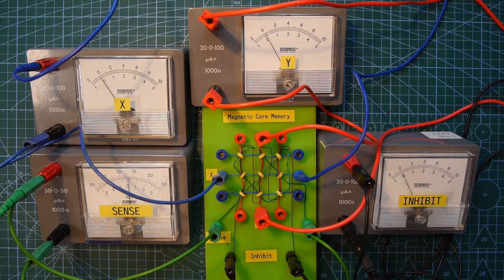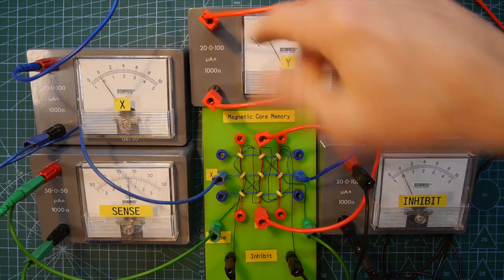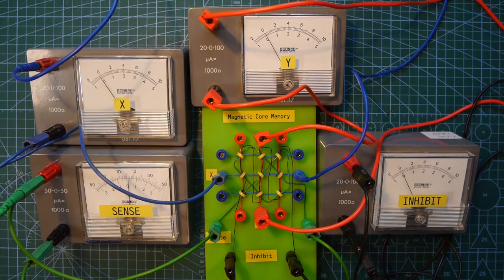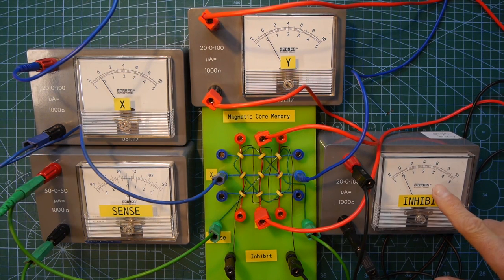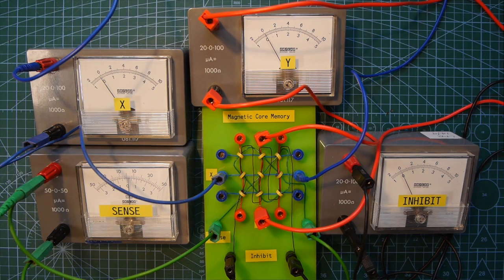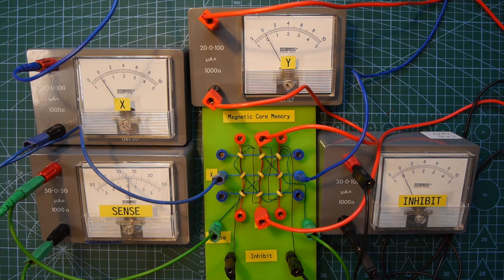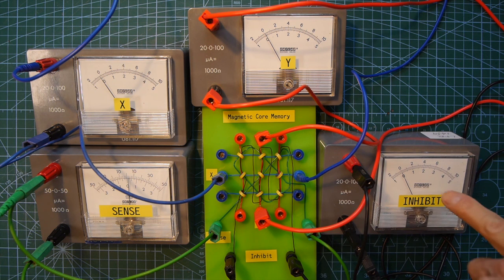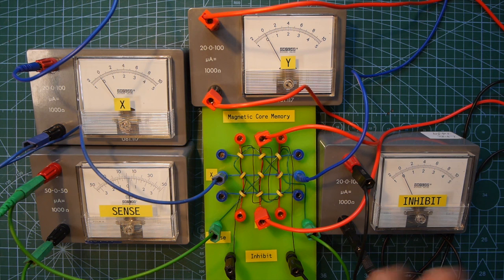So let's turn it on, send a pulse through this system that wants to reset this core to zero. But we're going to have an inhibit current in the opposite direction that will stop it from doing that. Right. So here we go. So you need to have sort of good eyes here. You need to watch X and Y, the coincident currents trying to set this to zero and the inhibit current in the opposite direction cancelling out one of those currents, meaning the magnetic field in the little core is not strong enough to flip it back to zero. So three, two, one, go.